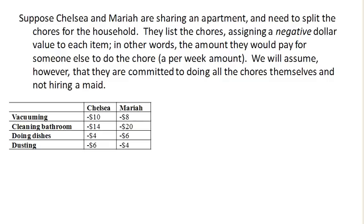We're gonna assign negative dollar values to each item to represent how much they don't want to do it. So if I gave it a value of negative one dollar, that would mean I'd be willing to pay a dollar to have somebody else do it. If I valued it at negative ten dollars, that means I'd be willing to pay ten dollars to not do it — I really don't like it.